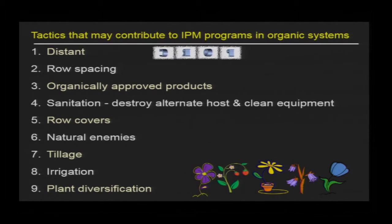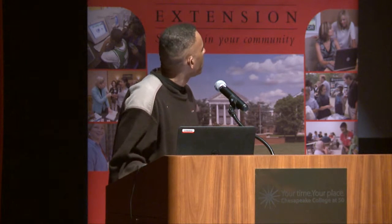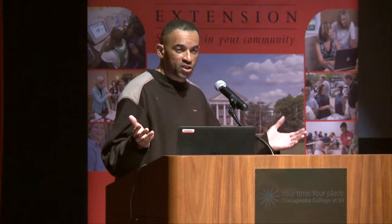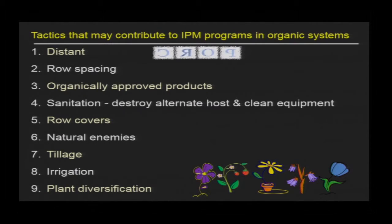What are some things that could contribute to an IPM program? Distant crop rotation — that should be the cornerstone of any pest management program. Then there's row spacing, which can have an impact on weeds and also on insects. Organically approved products, of course, and sanitation — such as removing alternate hosts that insects and pests may build up on. Also cleaning equipment when you go into a field that has a weed problem so you don't spread it to another field.